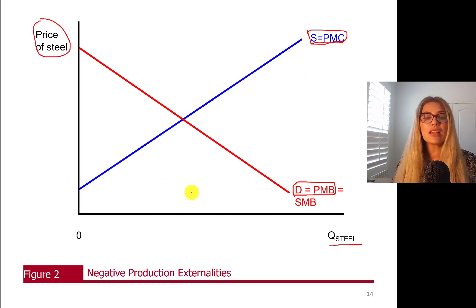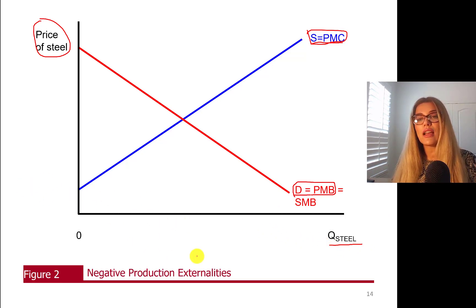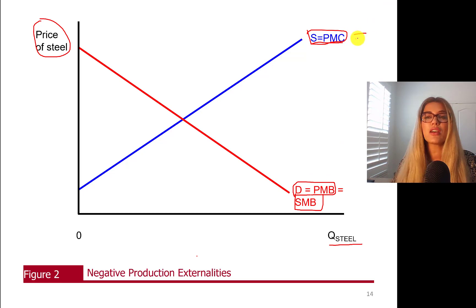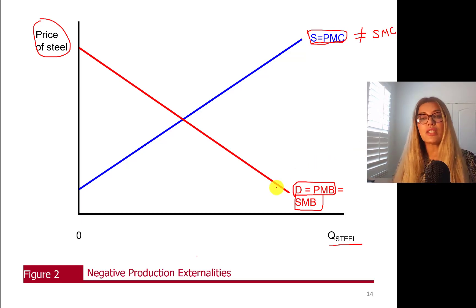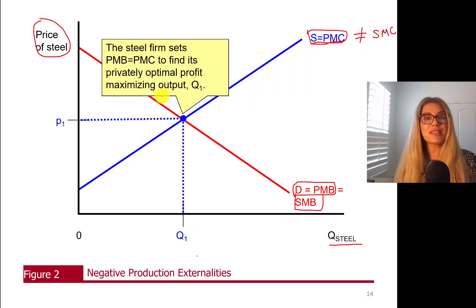In this case, we don't have any consumption externalities. Because of that, social marginal benefit equals private marginal benefit. Whenever there's an externality on the production side, private marginal cost won't equal social marginal cost — it's going to shift your social marginal cost curve away from the supply curve. So the steel firm sets private marginal benefit equal to private marginal cost to find its privately optimal, profit-maximizing output level Q1 at price P1. The yellow triangle represents consumer and producer surplus at Q1 — the privately optimal level.